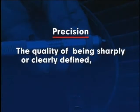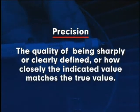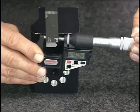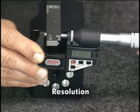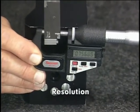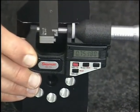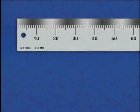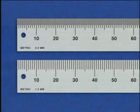Precision is the quality of being sharply or clearly defined, or how closely the indicated value matches the true value. The precision of a measurement device is in part a function of its resolution, which is the smallest graduation into which an instrument is divided. For example, a rule marked in one-half millimeters has a higher resolution and thus can be more precise than a rule marked in millimeters.